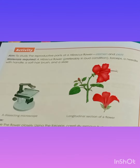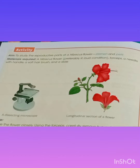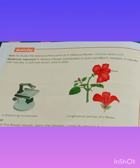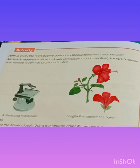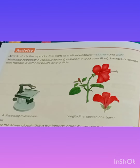The third question is: what do we call the part of the stem where the whorls of the flower are arranged? The answer is the receptacle. The fourth question is: how many whorls are commonly found in a flower? There are four whorls: number one, calyx; number two, corolla; number three, stamen; and number four, pistils.